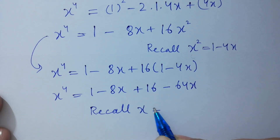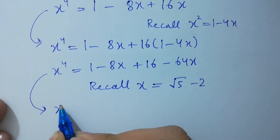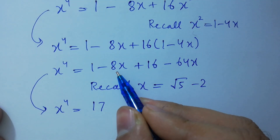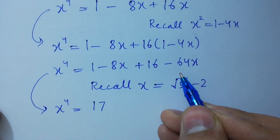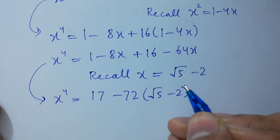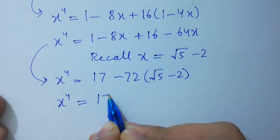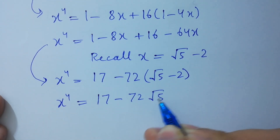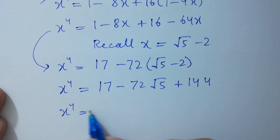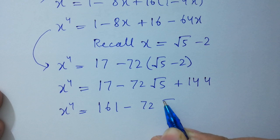Recalling that x equals square root of 5 minus 2: x⁴ equals 1 plus 16 which is 17, minus 8x minus 64x which is minus 72x, and x is √5 minus 2. So x⁴ equals 17 minus 72(√5 minus 2) equals 17 plus 144 minus 72√5, giving x⁴ equals 161 minus 72√5.